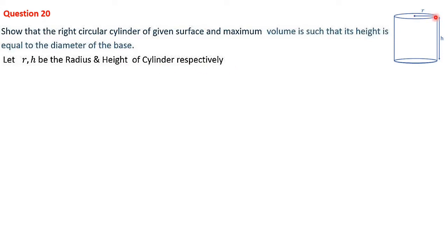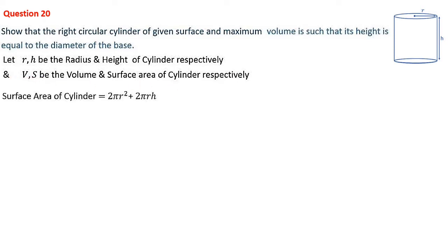Let r and h be the radius and height of the cylinder respectively, and V and S be the volume and surface area. The total surface area formula is 2πr² (for the two circular faces) plus 2πrh for the curved surface area. So S = 2πr² + 2πrh. This S is fixed, while r and h are the variables.